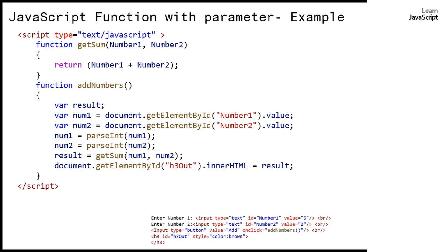Once we get inside 'getSum', the parameters are numbers this time. Number one contains the integer value 5 and number two contains the integer value 2. When they are both added we get a result of 7, and that is returned to the caller. The caller is the 'addNumbers' function, so the return value is stored in result, which now contains 7. We then use the h3 element's innerHTML and assign the result value of 7 to it.